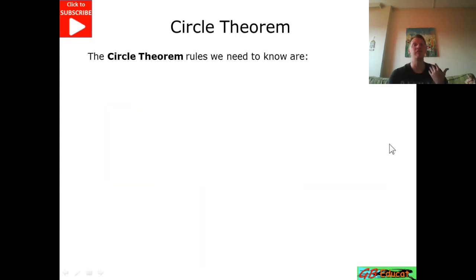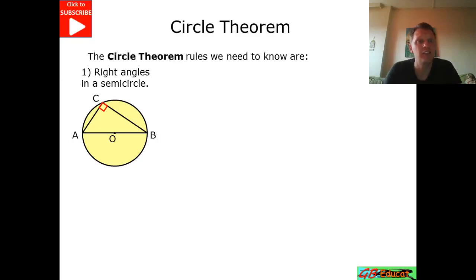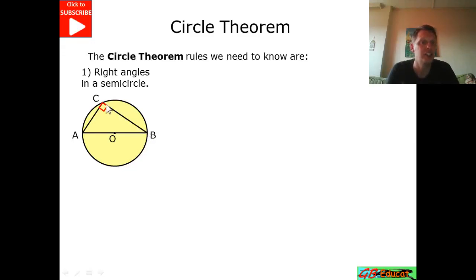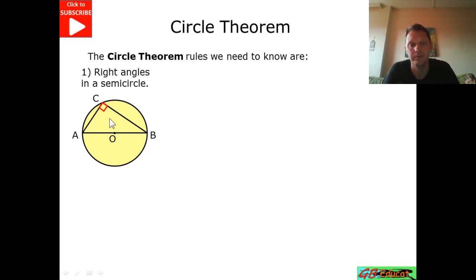Now the rules we need to know. The first one is the right angle in a semicircle. Any time we've got a diameter — a line touching the circumference going to the centre of the circle — and lines either side of the diameter touching the circumference to form a triangle, it's going to form a right angle.